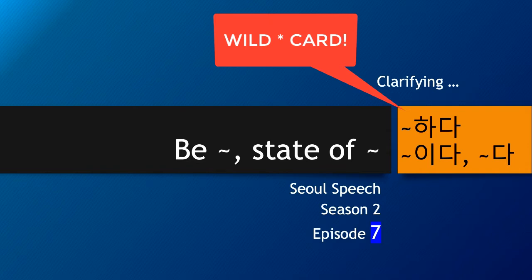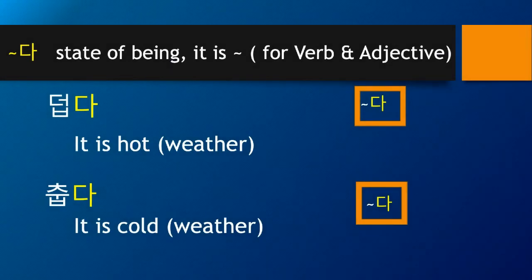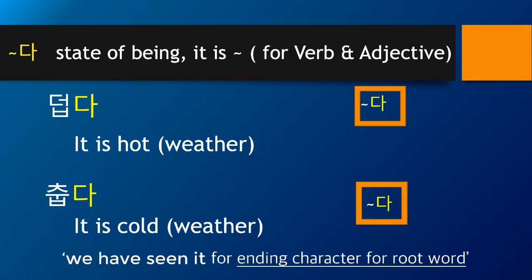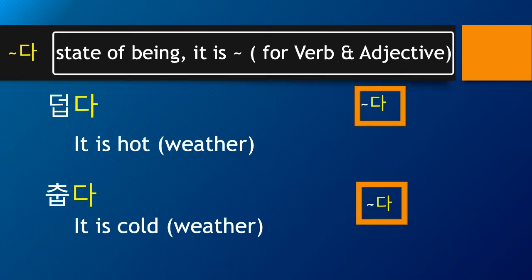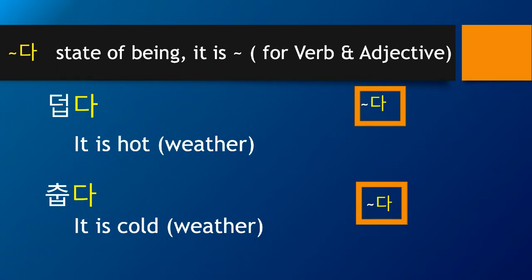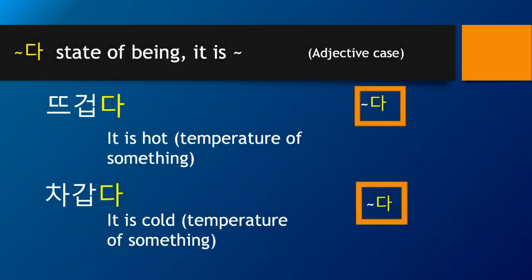You will be very fluent in Korean if you master these. The tail character 다 can be used as an ending character, but it is also used as a status being for the be verb or adjective form. For example, 덥다 means it is hot, and 춥다 means it is cold. These are used for weather, not for drink temperature. 덥다 and 춥다.